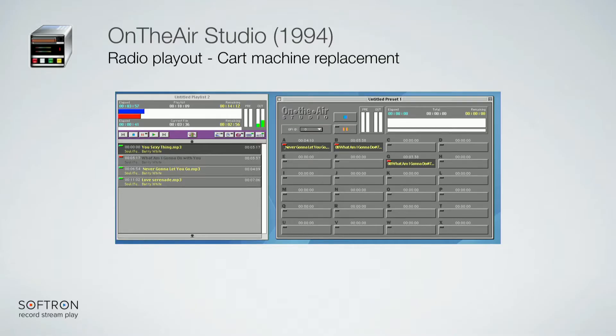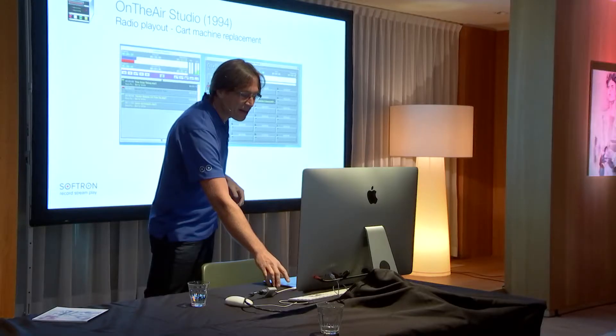The first software we did in 1994 was a radio playout application. You can see the user interface — it's not like what we would do today — but it was a good application for radio playout, cart automation, and things like that. That was the first media software application that we built on the Mac.